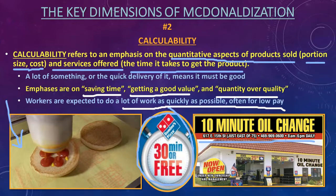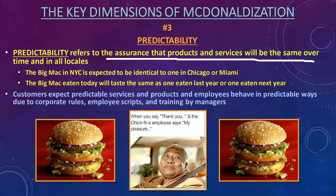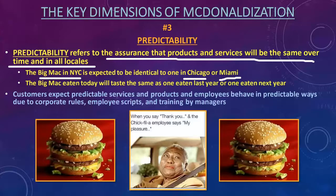Workers in these systems are also expected to do as much work as possible in as little time as possible — often for the lowest possible paycheck. So we've got efficiency and calculability. Number three is predictability: the assurance that the products and services we get are going to be the same over time and in all locations. Ideally, the Big Mac you get in New York is going to be identical to the one you get in Chicago, Miami, or Columbus — and the one you eat today in Columbus is going to taste the same as the one you ate last week or last year, and the same next week or next year.